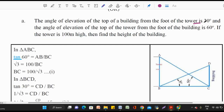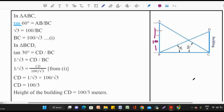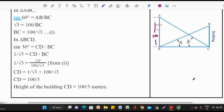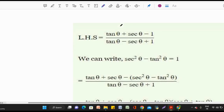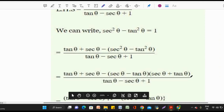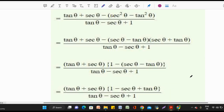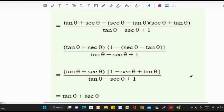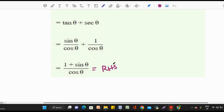Option: the angle of elevation of the top of a building from the foot of the tower is 30°, and the angle of elevation of the top of a tower from the foot of the building is 60°. If the tower height is 100 m, find the height of the building. The diagram is shown for this question. Also, prove that (tan θ + sec θ − 1)/(tan θ − sec θ + 1) = (1 + sin θ)/cos θ. Taking LHS and simplifying, we prove it equals the RHS. Hence proved.